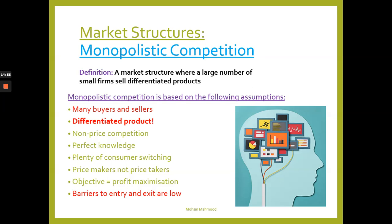Firms in monopolistic competition are price makers, not price takers - they set their own prices. The objective is similar to perfect competition: profit maximization. Barriers to entry and exit are very low, not free but low, so it's easy to enter this industry.